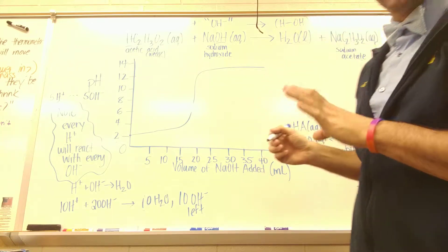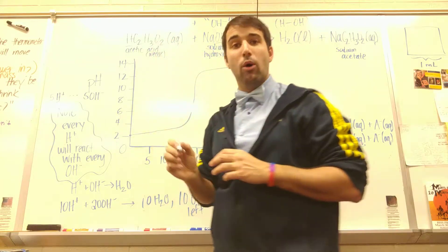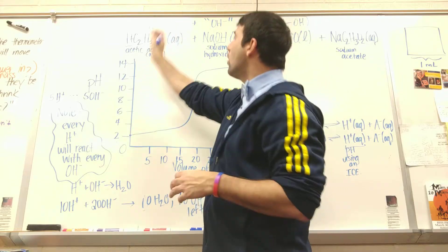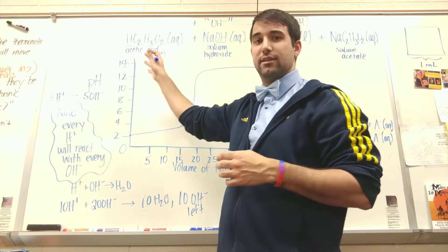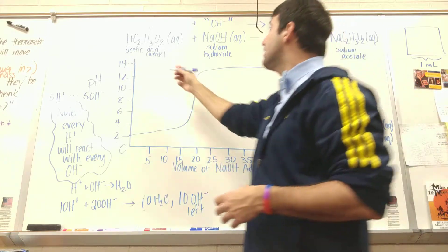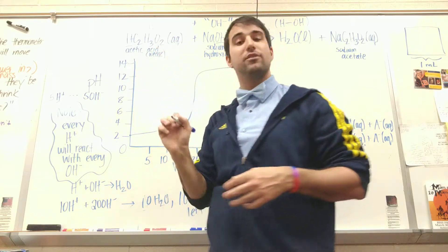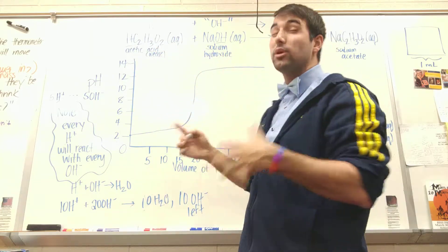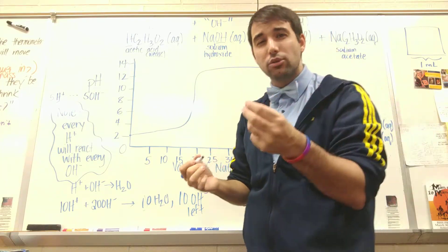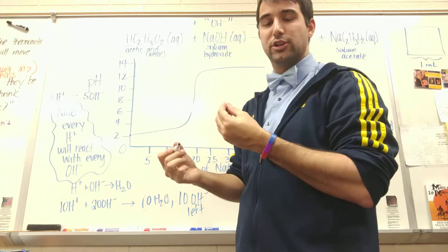So for every one mole of acid, I will react with one mole of base. If I had 0.1 moles of acid, how many moles of base would I need? 0.1. If I had 1,000,000 moles of acid, how many moles of base would I need to neutralize it? 1,000,000. If I had 6.02 times 10 to the 23rd molecules of acetic acid, I would need 6.022 times 10 to the 23rd molecules of sodium hydroxide. So make sure you know how acids and base react. For every 1 H+, I'll need 1 OH-.